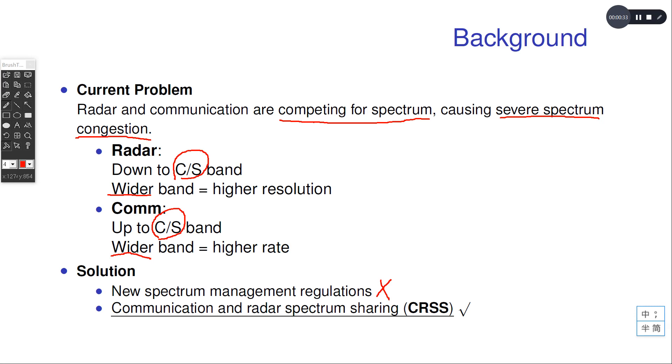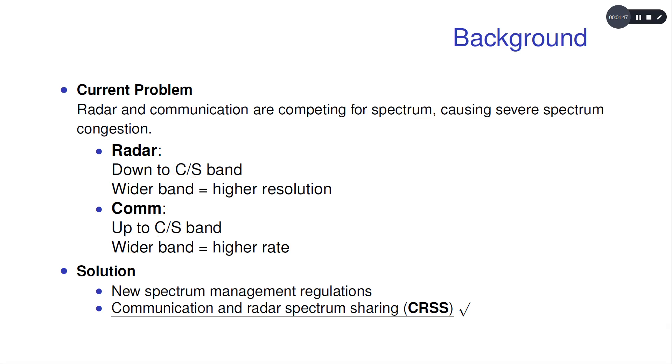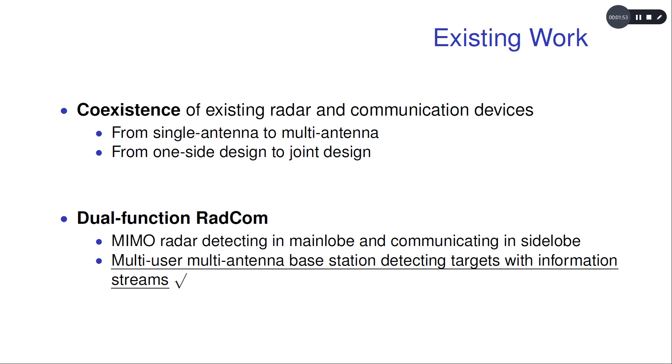Instead, there is also a promising solution, which is communication and radar spectrum sharing. This is a long run choice because it allows both communication and radar systems to work in the same band at the same time. There are two main research fields in spectrum sharing.